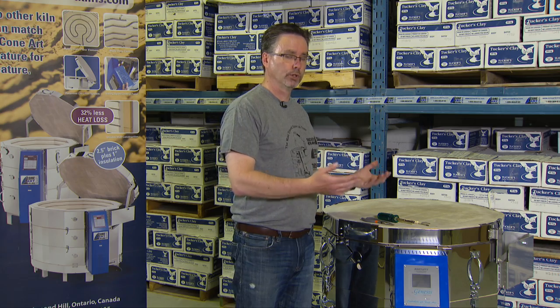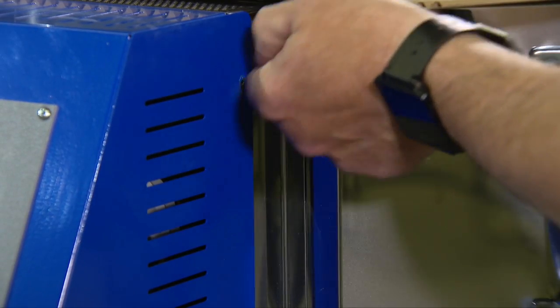First, turn off the power to the kiln. Then, as we've done previously, we're going to open the blue panel.